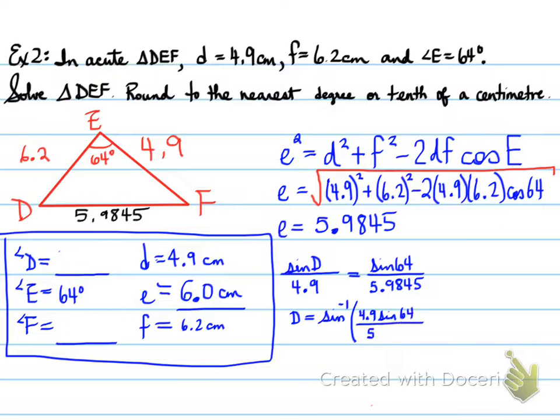So we take the sine inverse of 4.9 times sine 64 over 5.9845, and we get D is equal to 47.3847 degrees. So we put that in to the nearest degree is 47 degrees. And then we're going to use SATT to find our last one.